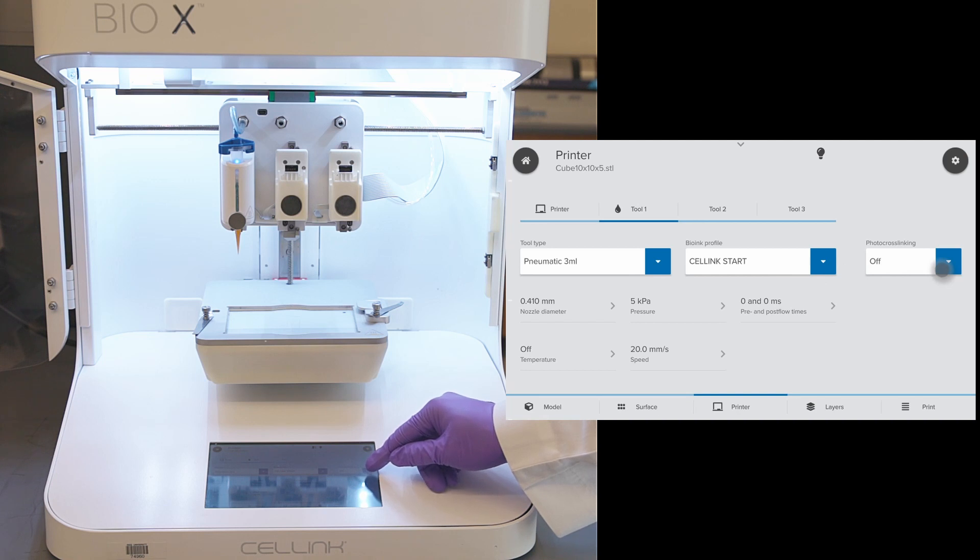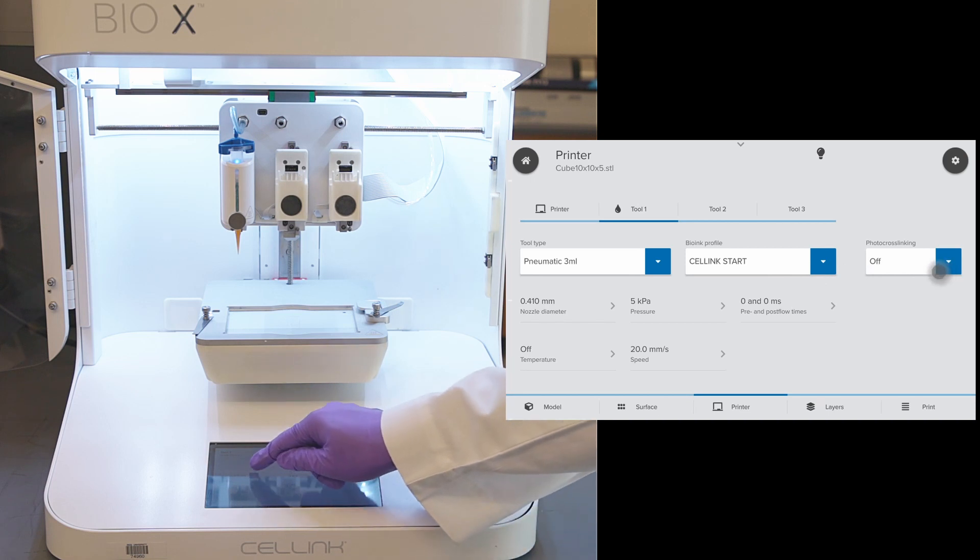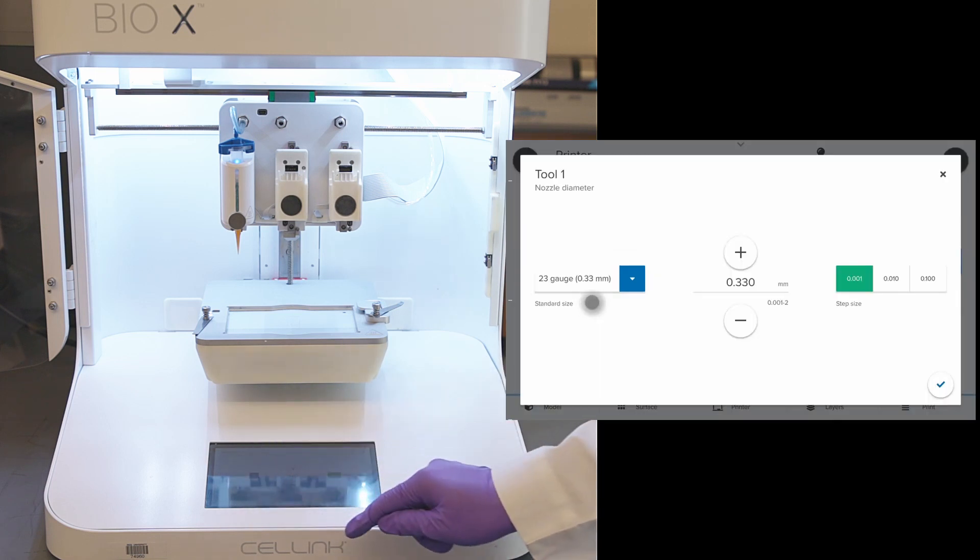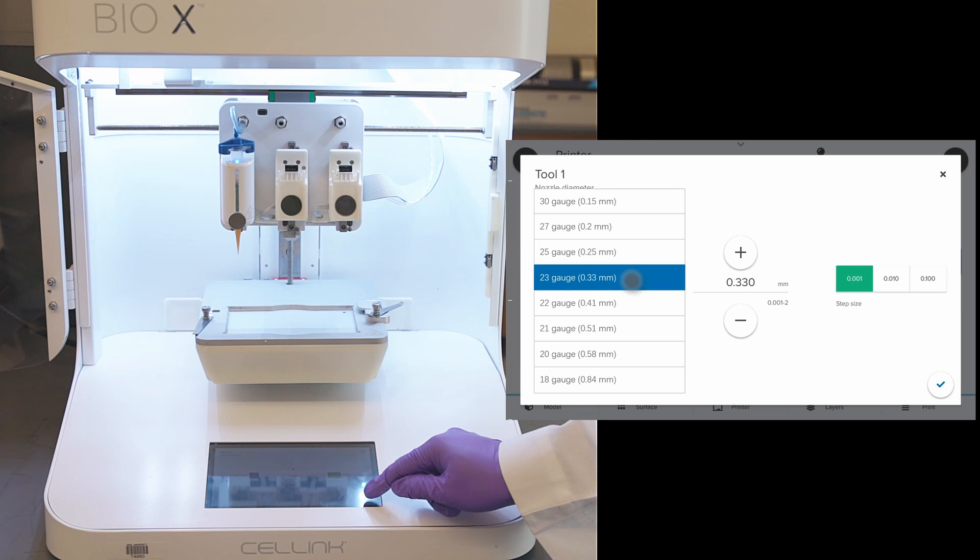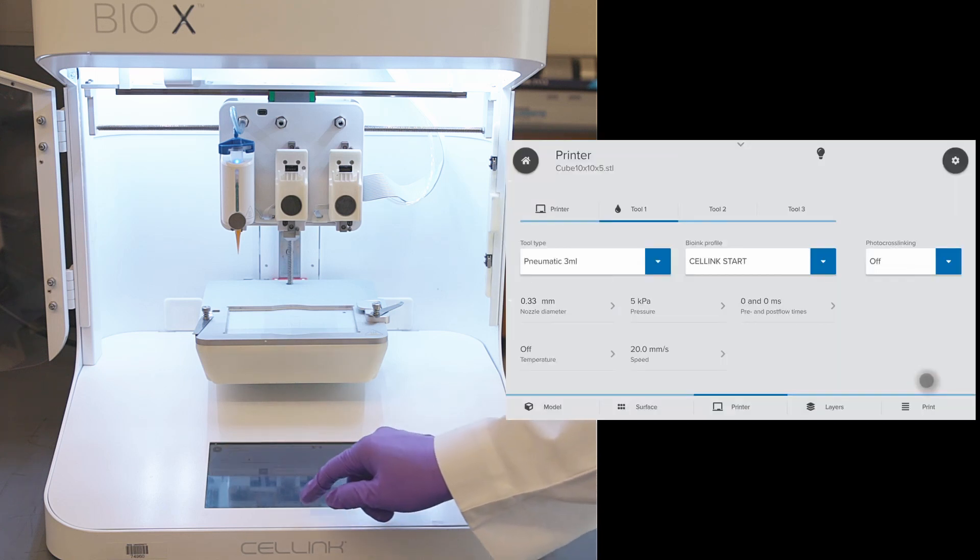Again, we have options for photo crosslinking to be enabled or disabled. Next is the nozzle diameter. Today, we will be using a 23 gauge nozzle and click OK to accept the changes.